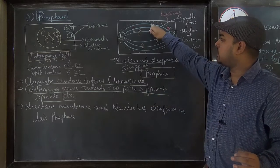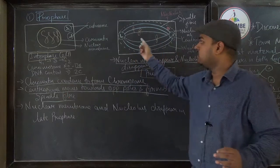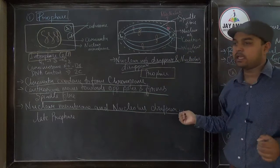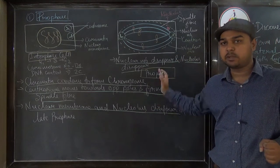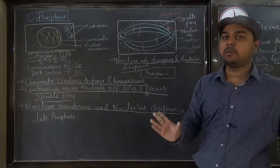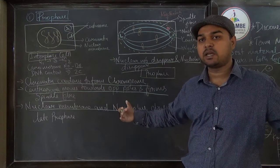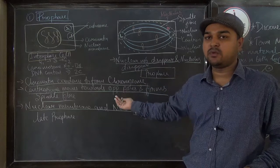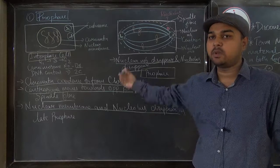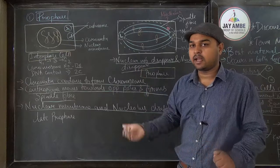After prophase comes metaphase, where chromosomes align at the center. Then in anaphase the centromere splits and chromosomes move towards the poles. Finally telophase occurs. So the sequence is prophase, metaphase, anaphase, and telophase. We will cover these phases in the next class.